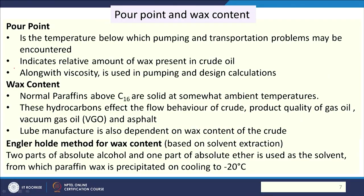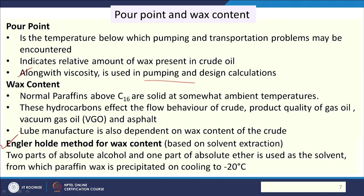Another property is pour point and wax content. Pour point indicates flowability — it is the temperature at which the fuel ceases its flow. It is related to wax content: more wax means the flow is more easily seized. Together with viscosity, pour point is used for pumping design. Paraffins with carbon number greater than 16 are solid, and these solidified paraffins are considered the wax. Wax content is determined by the Angler-Holder method using solvent extraction — absolute ether and absolute alcohol — and paraffin wax is precipitated at minus 20°C.